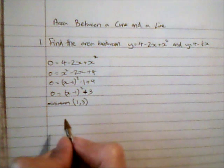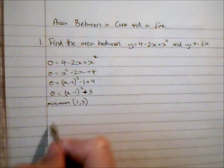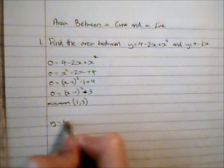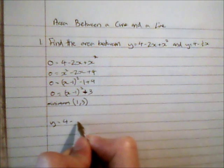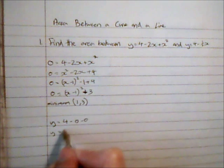So it intersects the y axis when x is 0 so that's just going to be at 4.